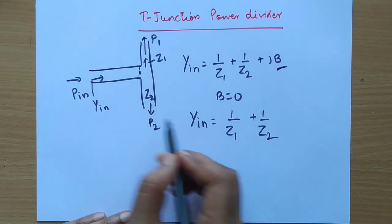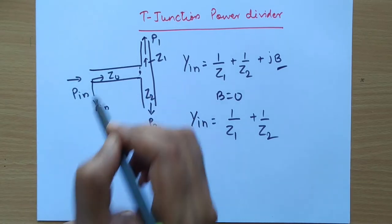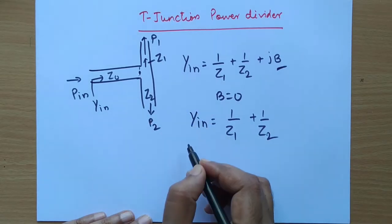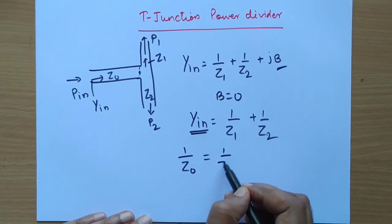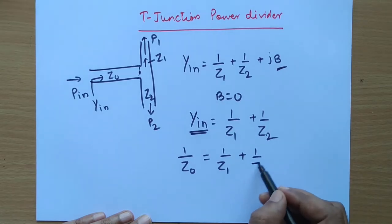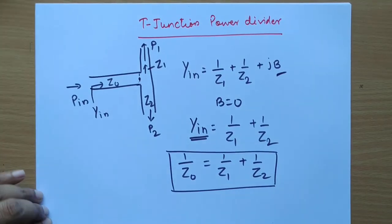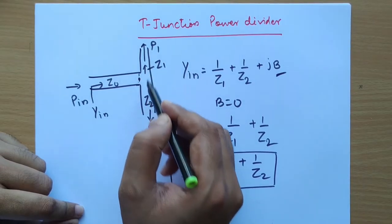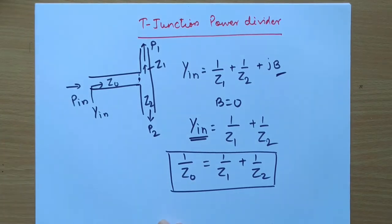To have matching with the input characteristic impedance — say Z0 — to have matching at the junction, we must have this input admittance equal to 1/Z0. We will try to understand the problem due to different characteristic impedances and their effect on matching properties.